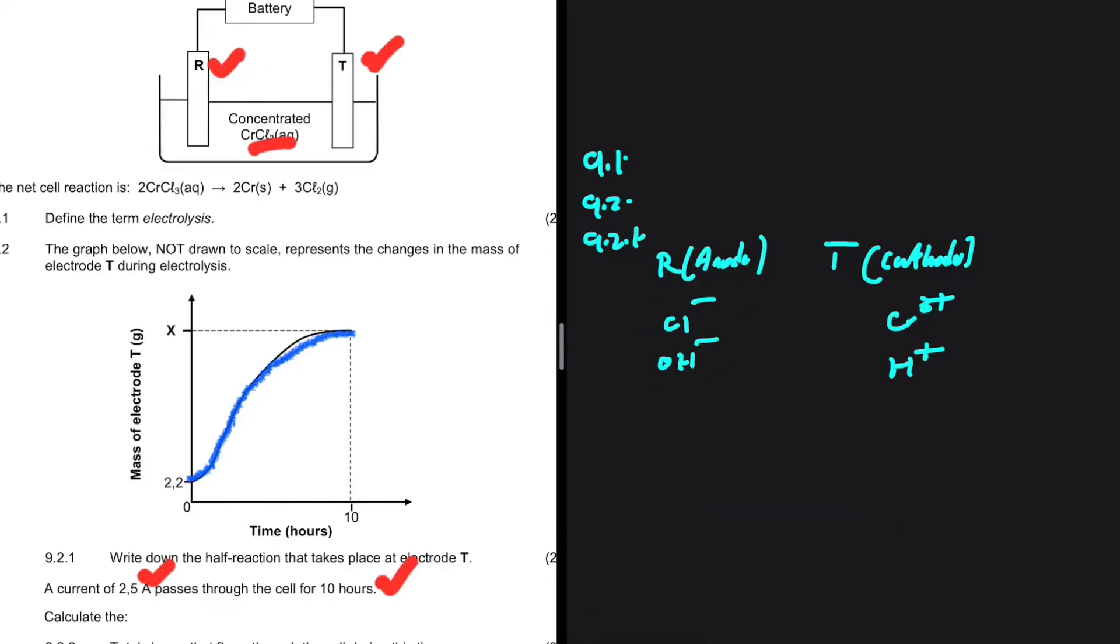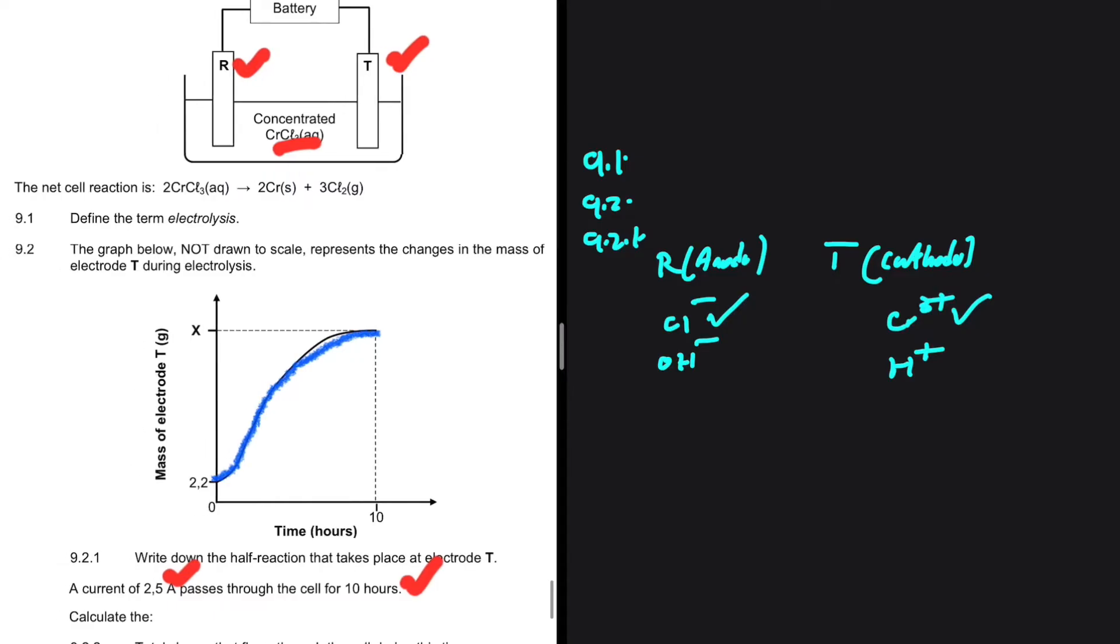At the anode, oxidation takes place. We're going to have oxidation of Cl-. And at the cathode, reduction takes place. At the cathode, Cr3+ will undergo a reduction. We can also see that from the net cell reaction that we are given. So, the half reaction that will take place at electrode T, which is our cathode, will be Cr3+ plus 3 electrons to give us Cr. That is the half reaction that takes place at the cathode, 9.2.1.